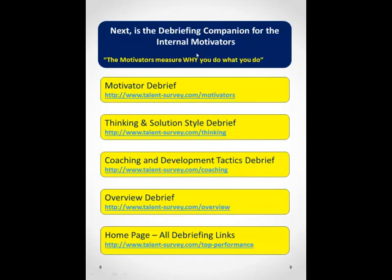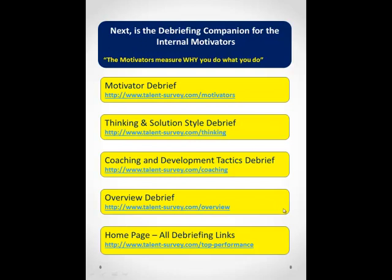The next step is available here, where we're going to be exploring the internal motivators that measure why you do what you do. The communication piece shows us how you deliver your motivated decisions to other people. You can click on any of these links or click on the homepage link to go back to the very beginning, and start and stop as you like. I hope you will find this valuable. When you're ready, click on the motivator link and continue the process. Thanks for visiting.